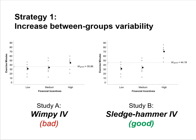The next slide illustrates this. Study A shows the wimpy independent variable — very little difference between the means of low, medium, and high incentive conditions, likely producing non-significant results. Study B shows the sledgehammer independent variable — big differences between how much money participants would earn, leading to substantially more exercise in the high incentive condition. A sledgehammer independent variable is much more likely to give you significant results.